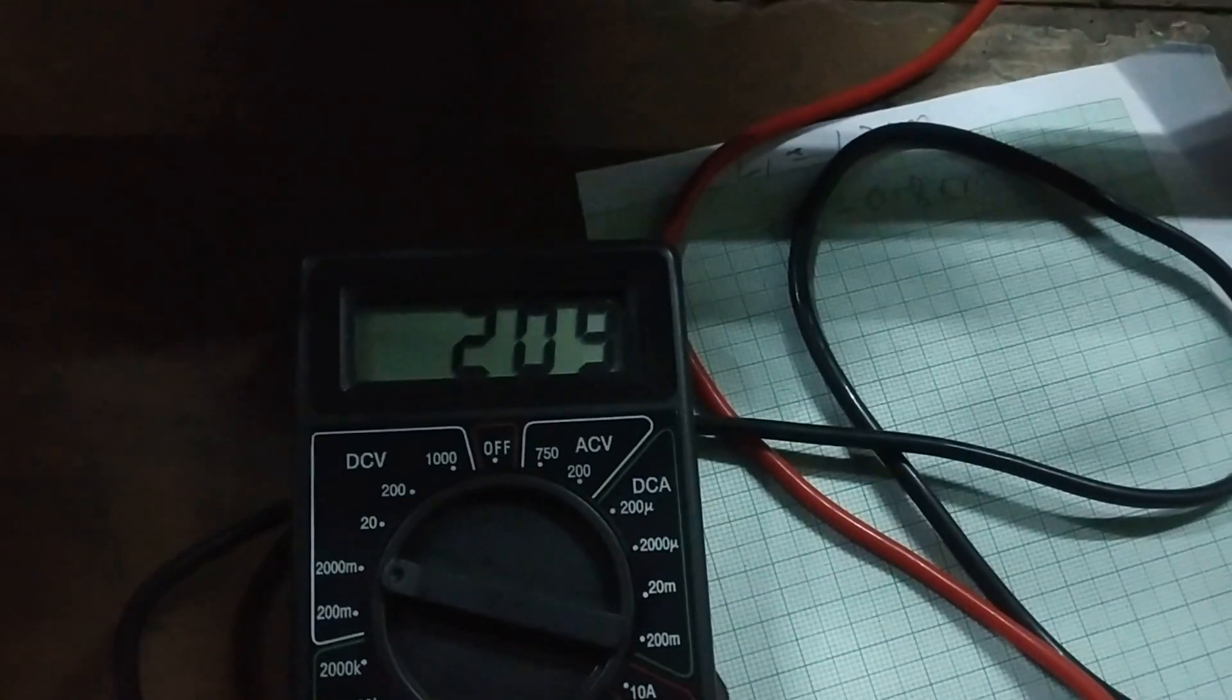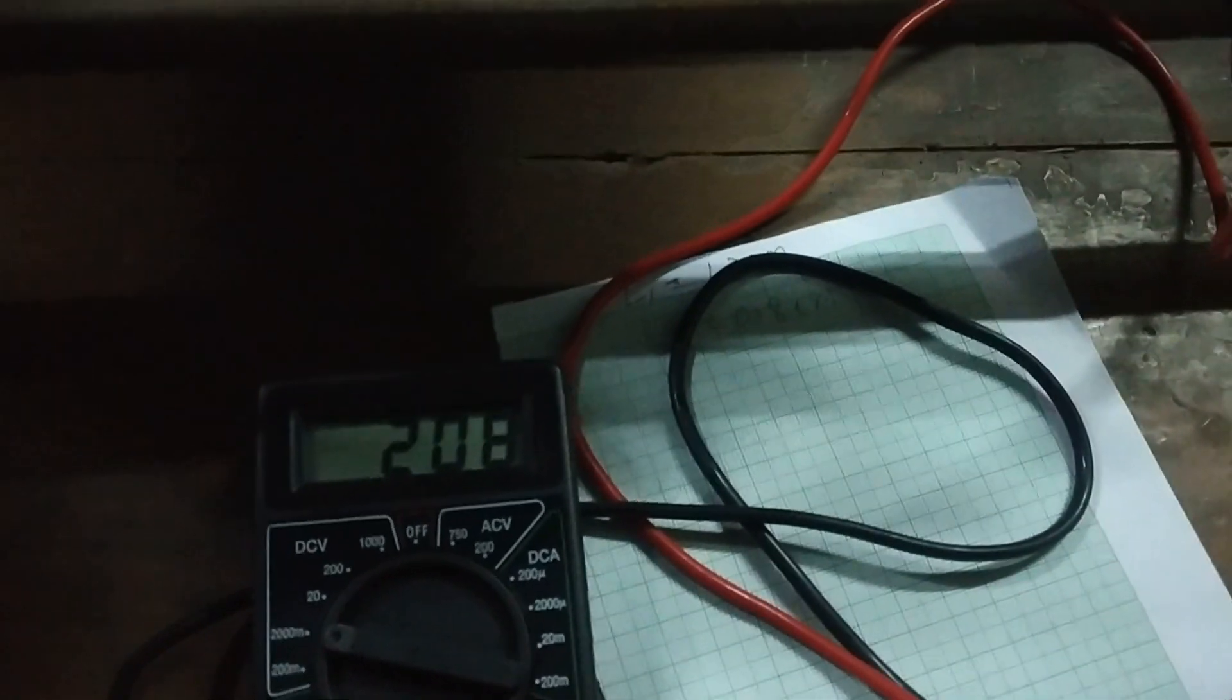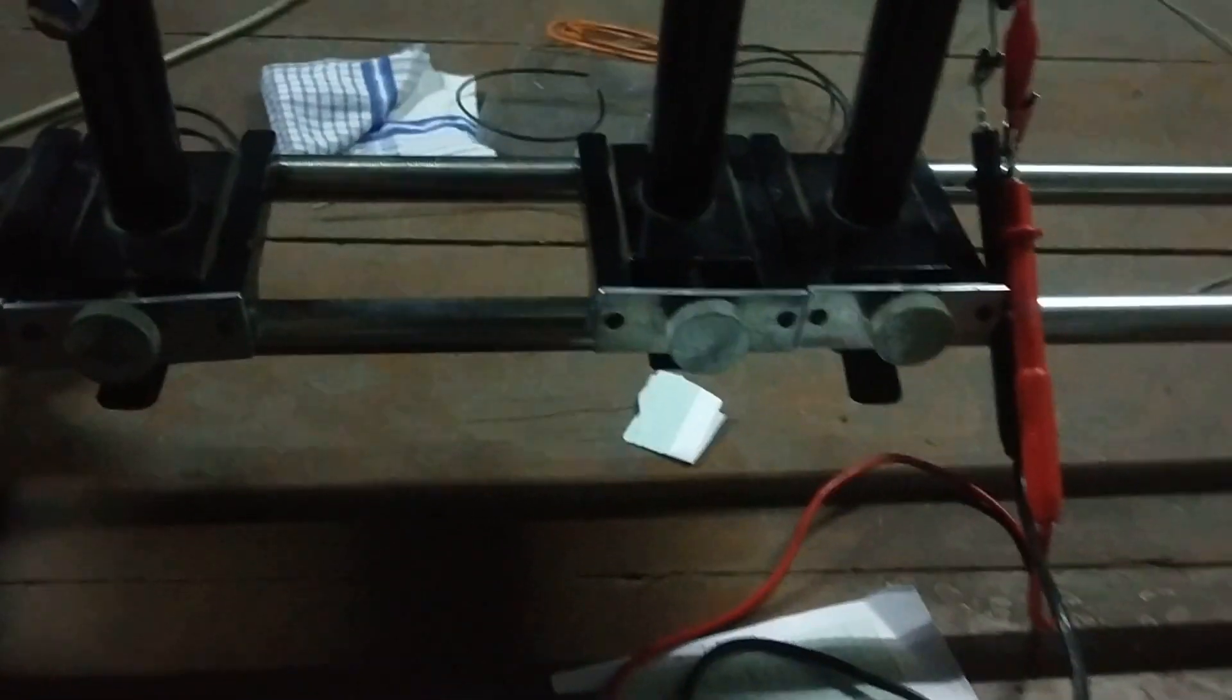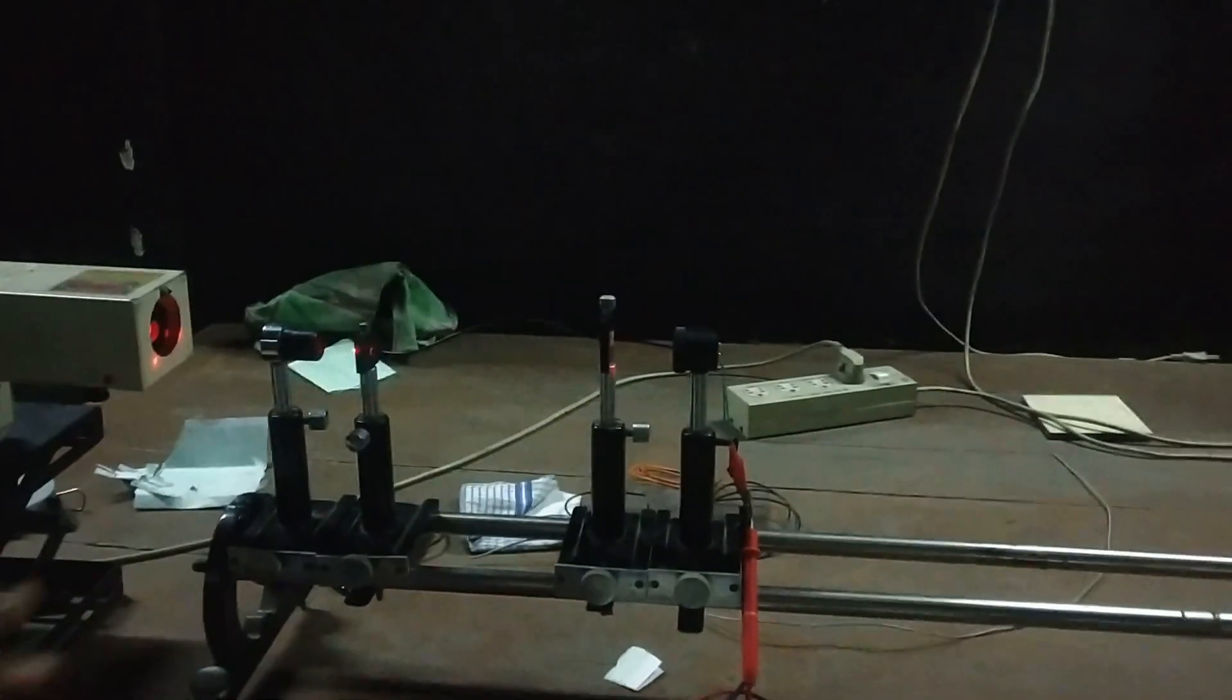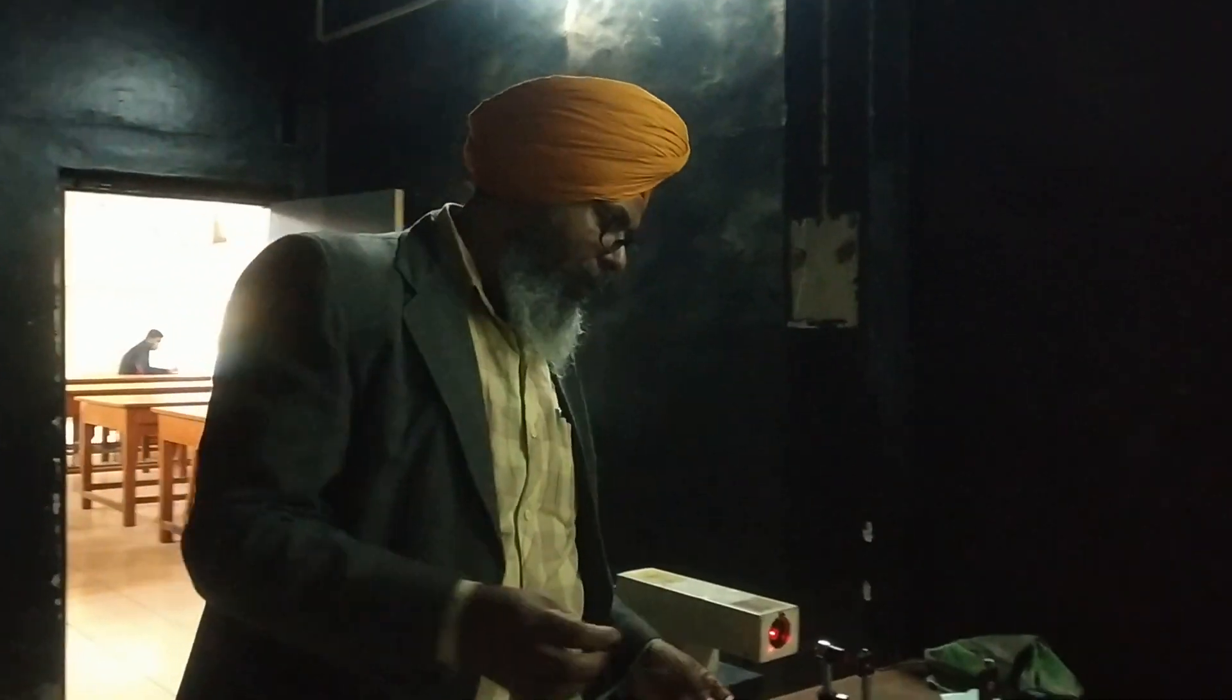So I would request Gurmukh Singh to note down this reading: V1 is equal to 209. It is slightly fluctuating because this table is vibrating and some settings may change. Now this reading is stable at 209 volts. Now I will request Gurmukh Singh to please hold this camera and I will now change this fiber. Now we have another piece of the fiber.